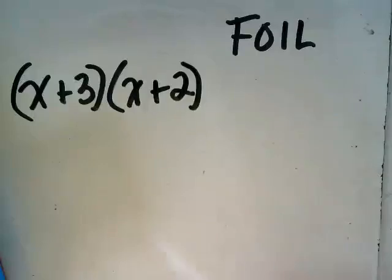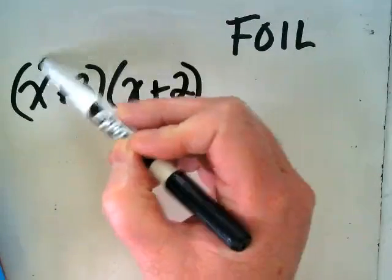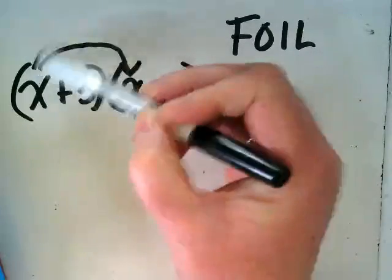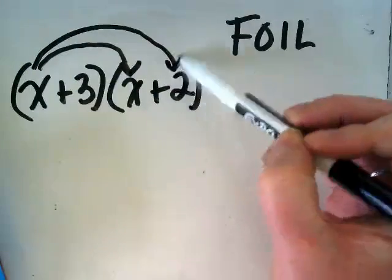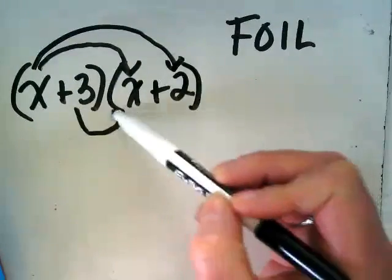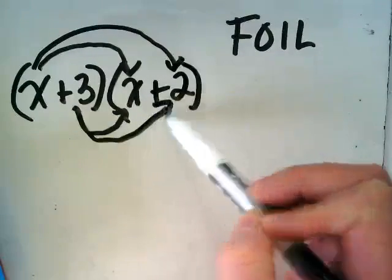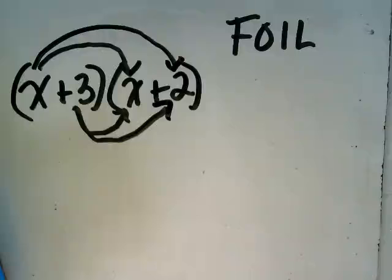They used to teach us what's called the FOIL method. And FOIL stands for first term, outer terms, inner term, and last term. Ooh, that just hurts my brain. No, it just all won't look. Inner term, last term.